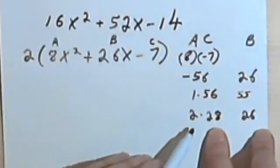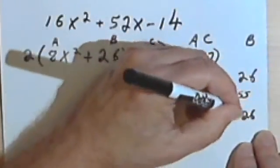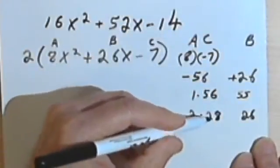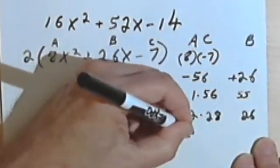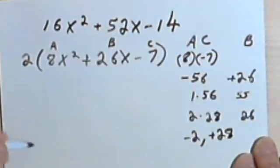Now I just have to decide... Remember I said one is positive, one is negative. Well, I want a positive 26. So that would mean the bigger number would be positive. So it's going to be a negative 2 and a positive 28.